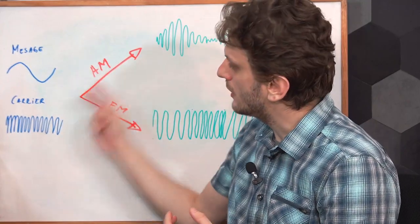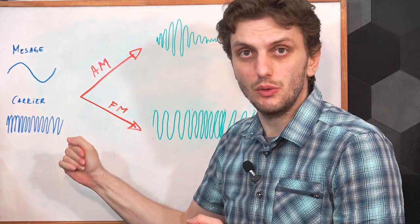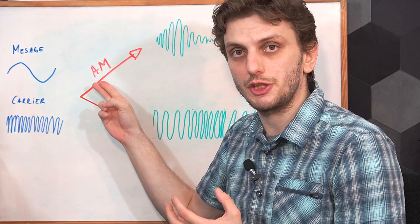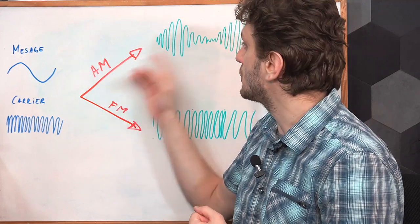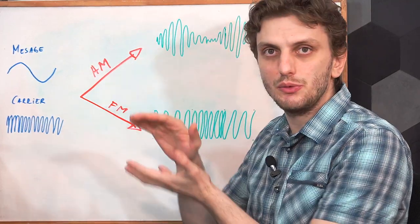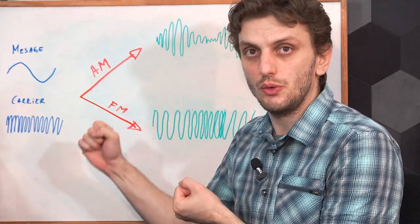So first of all, how does FM work? What is frequency modulation? So if we have a carrier signal and a message that we want to encode, one method is by amplitude modulation, in which we take the carrier signal and change its amplitude based on the message that we're trying to encode.